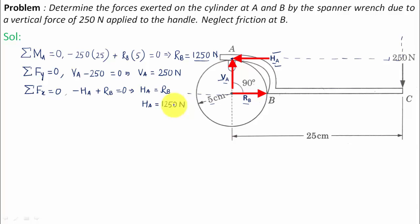Now we've got the values of RB, HA, and VA. The overall resultant or overall reaction at A can be computed by this formula: square root of HA squared plus VA squared. When you put all of this in, the value of RA equals approximately 1275 Newtons.